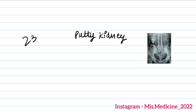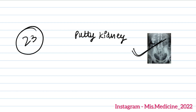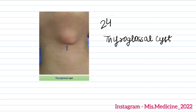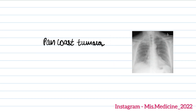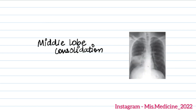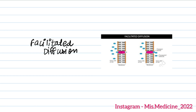Question 23 was Putti kidney. Question 24 was thyroglossal cyst. Question 25 was parotid tumour. Question 26 was Pancoast tumour. Question 27 was middle lobe consolidation — there was some consolidation in the middle lobe. Question 28 was facilitated diffusion.